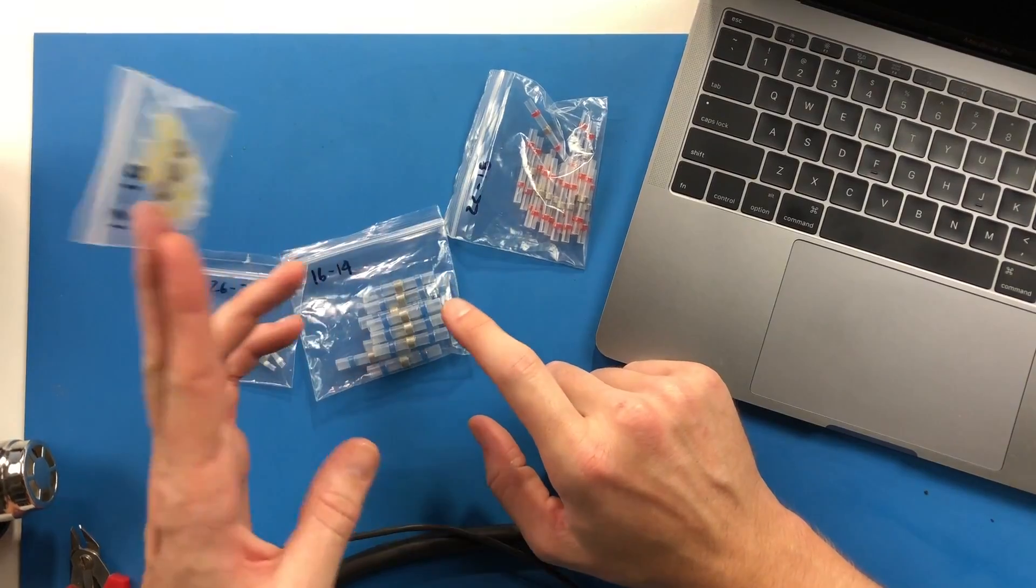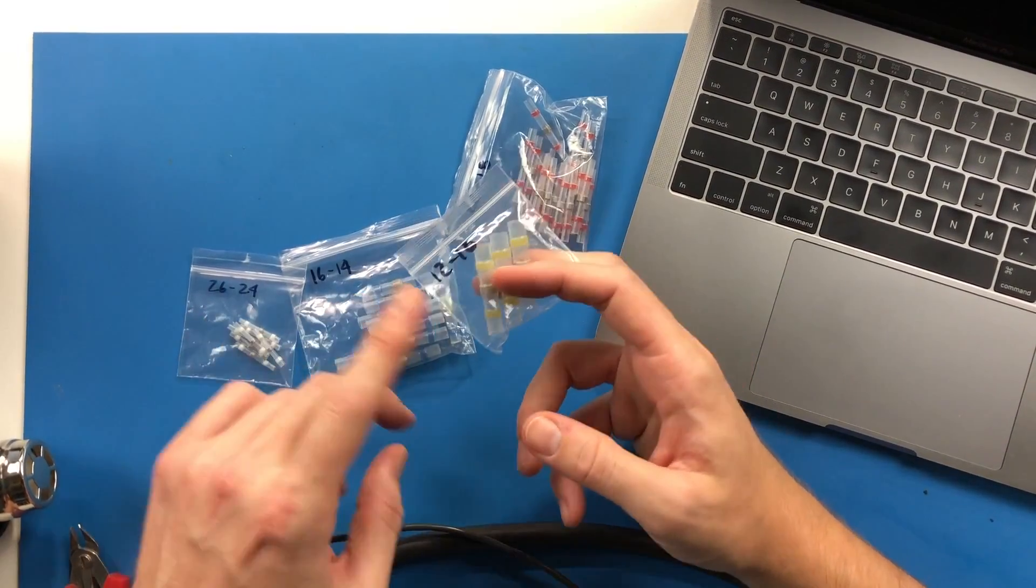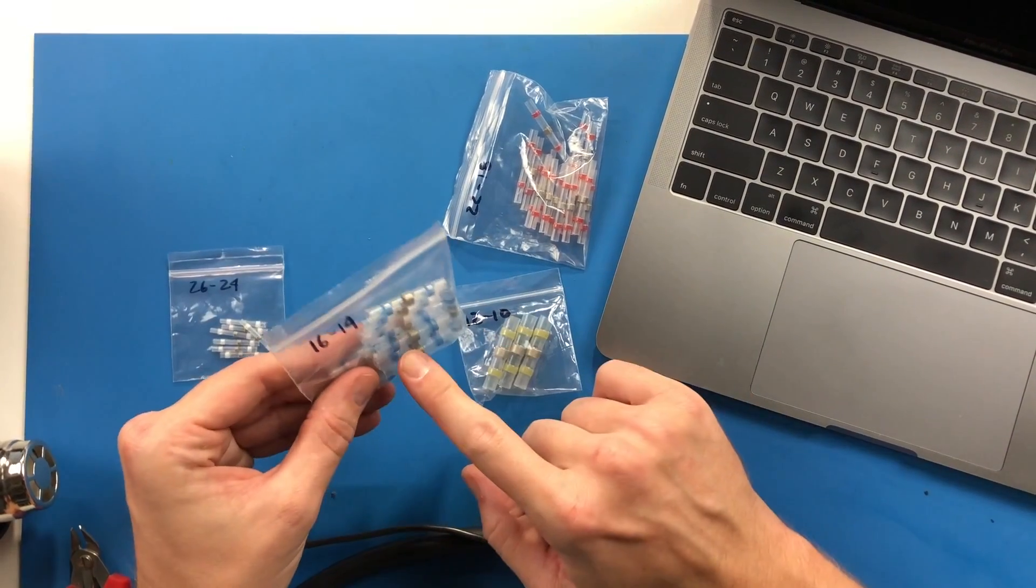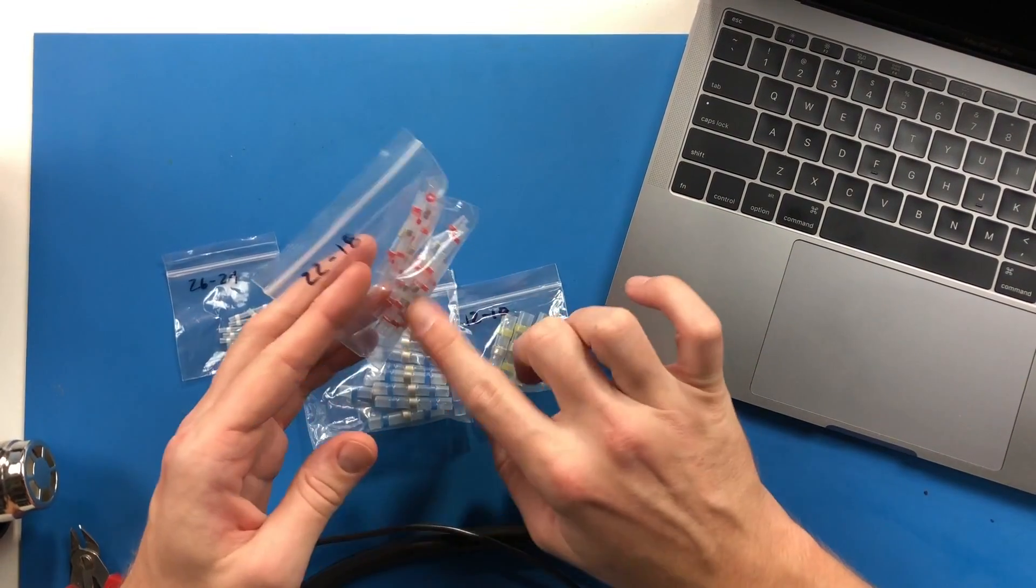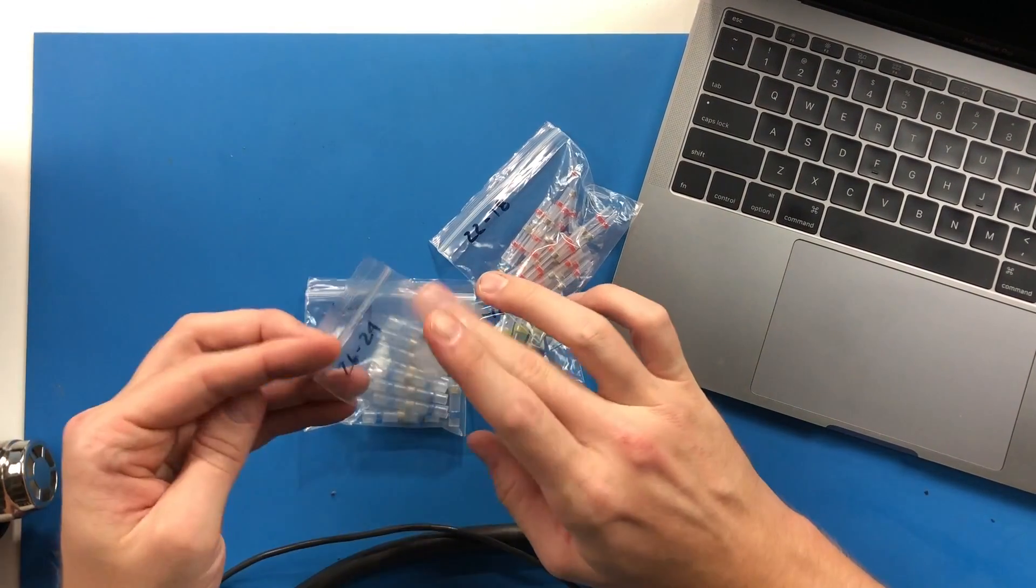From what I can see, they tend to come in these four common sizes, and that is the 10 to 12 gauge, and these are American wire gauge numbers. So 10 to 12 AWG, 14 to 16, then we've got 18 to 22, and then 26 to 24. We're going to try the 22 gauge and the 12 gauge and see what happens.